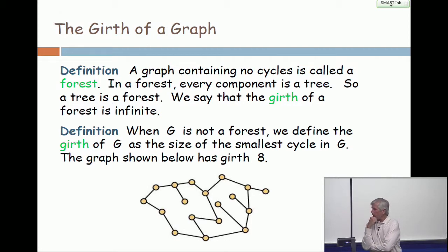So skip to the bottom. What's the smallest cycle in that graph on the bottom? There's a big one around the outside, but there are two smaller ones, one on the left, one on the right. Which of those two is smaller?